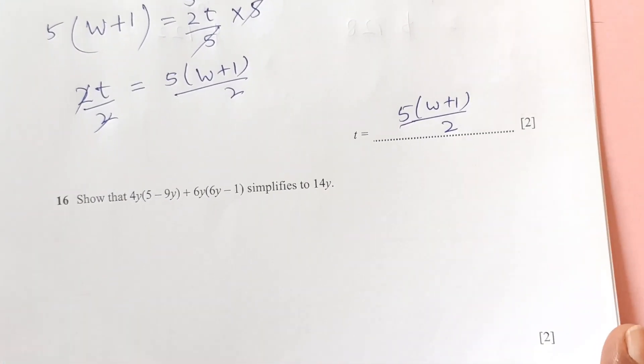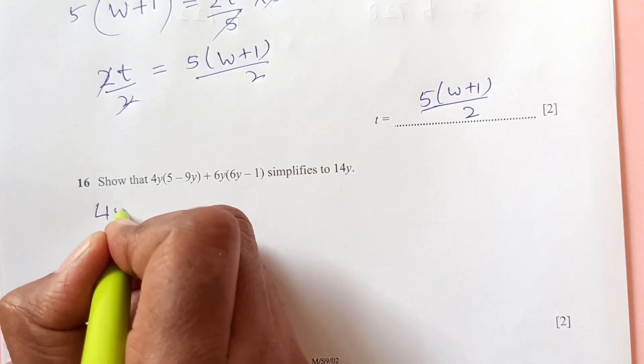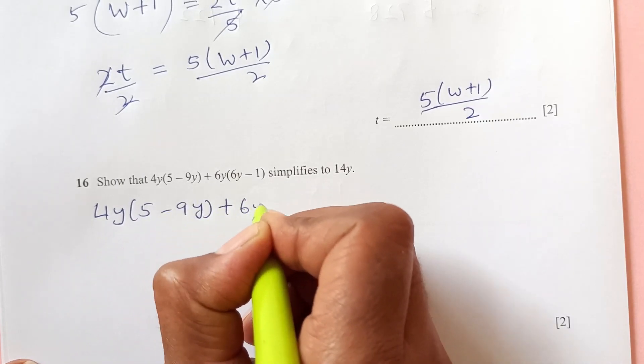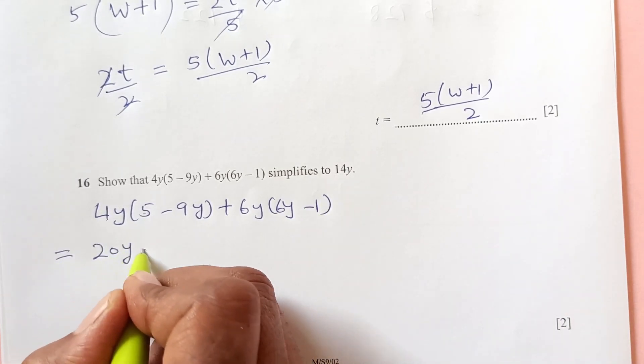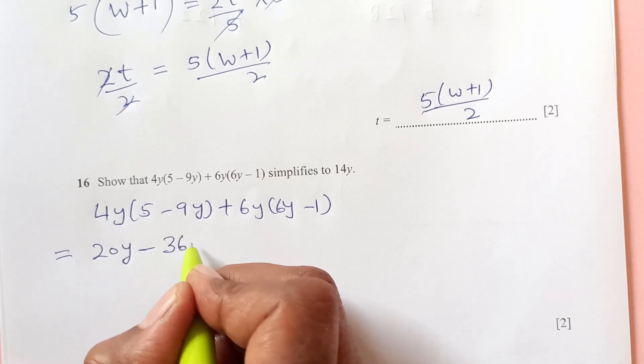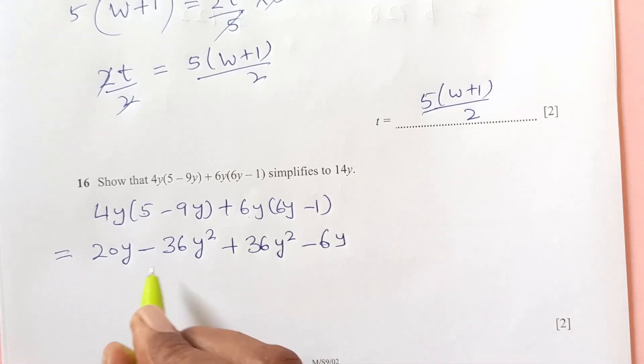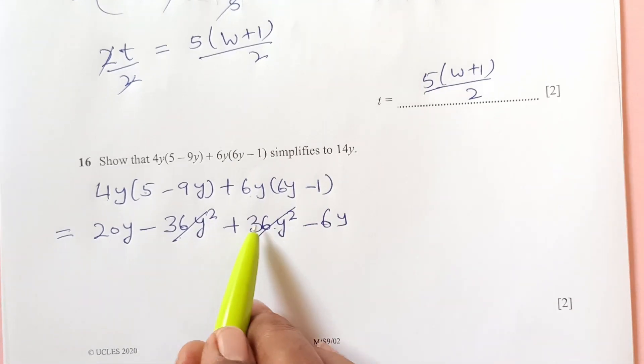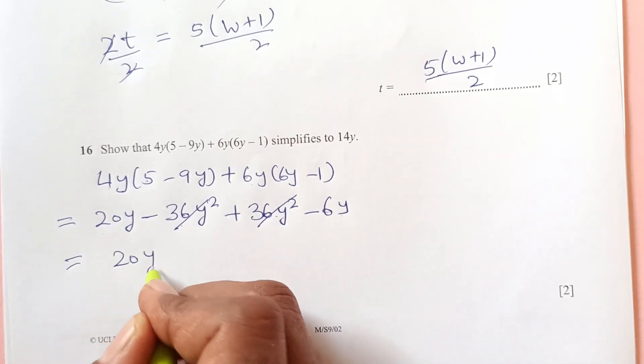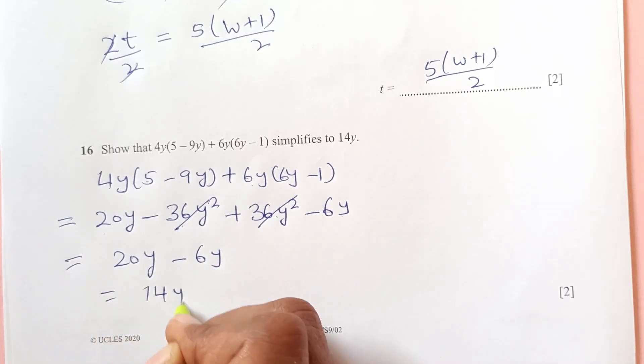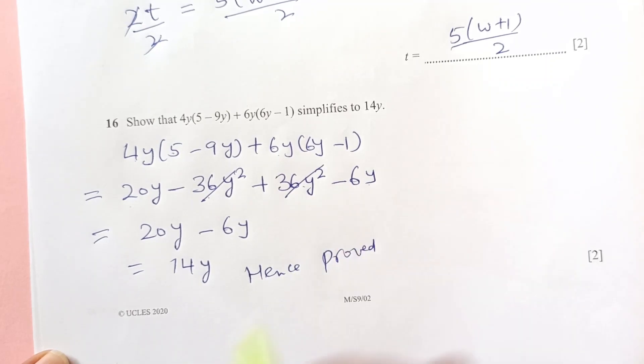Now number 16. Show that this simplifies to 14Y. So let's solve this. 4Y times 5 minus 9Y plus 6Y times 6Y minus 1. So 5 times 4 is 20Y minus 9 times 4, 36Y squared plus 6 times 6, 36Y squared and minus 6Y. So this and this both have different signs. So this and this is cancelled. That is 36 minus 36 is 0. So you can just strike it off. So 20Y minus 6Y minus 6Y, 20Y minus 6Y which is 14Y. So hence proved that this simplifies to 14Y.